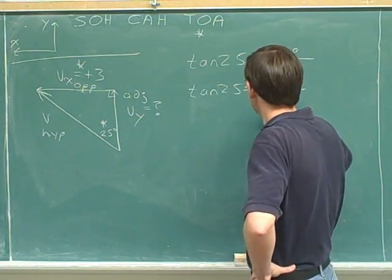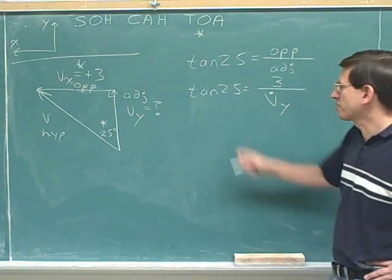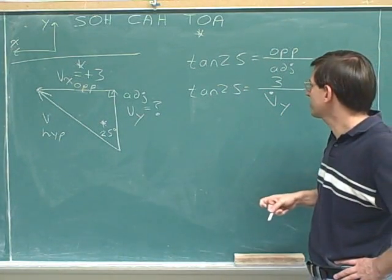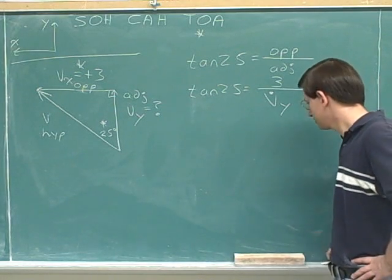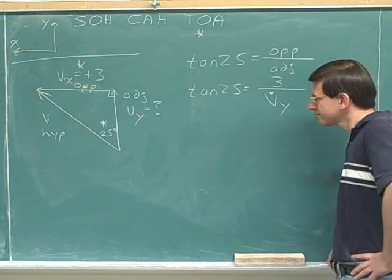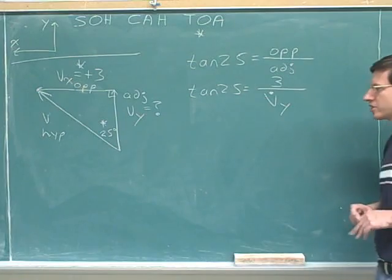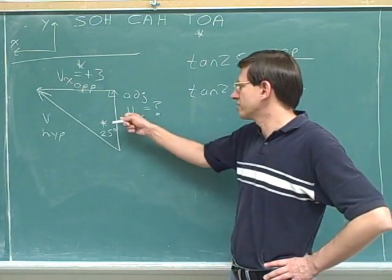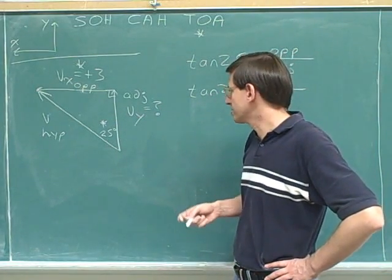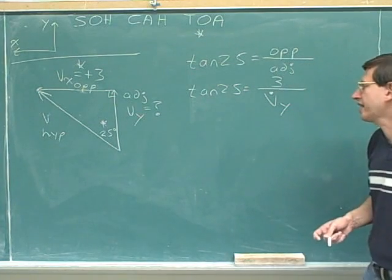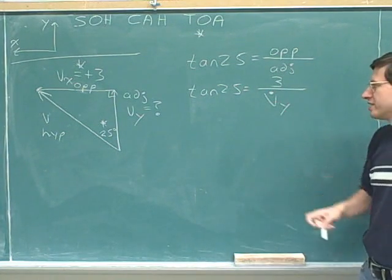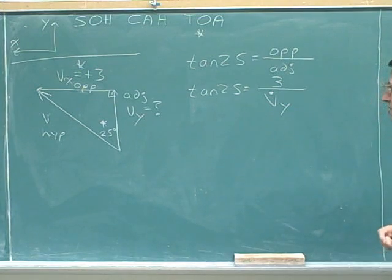Now, I hope that when you did this, you used v_y with a dot. Because, of course, we're working with trig functions. And trig functions refer just to magnitudes, not to signed components. So the trig function is not going to tell us v_y. It's only going to tell us v_y with a dot, the magnitude of the y component.